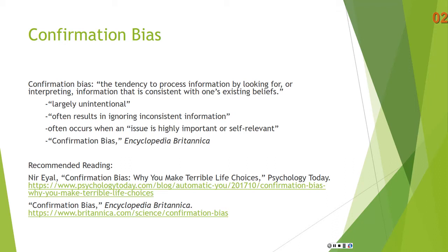Even if you're a smart person, even if you do try to look at both sides, it often results in ignoring inconsistent information. So in the death penalty example, you saw the piece from the New York Times and you just kind of scrolled past it. You didn't really look at it. That would be ignoring information that's inconsistent with your beliefs.